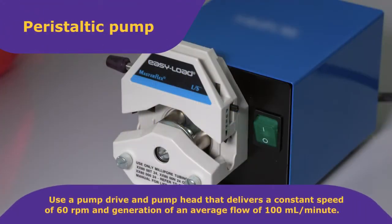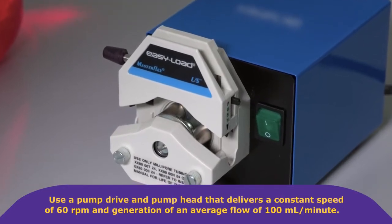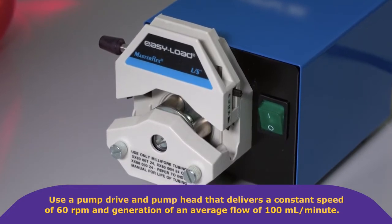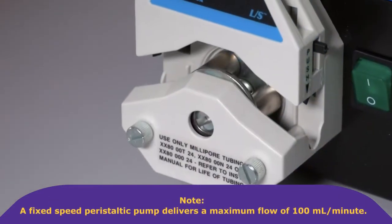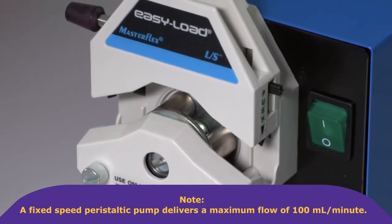Use a pump drive and pump head that delivers a constant speed of 60 RPM and generation of an average flow of 100 mils per minute. Note, a fixed speed peristaltic pump delivers a maximum flow of 100 mils per minute.